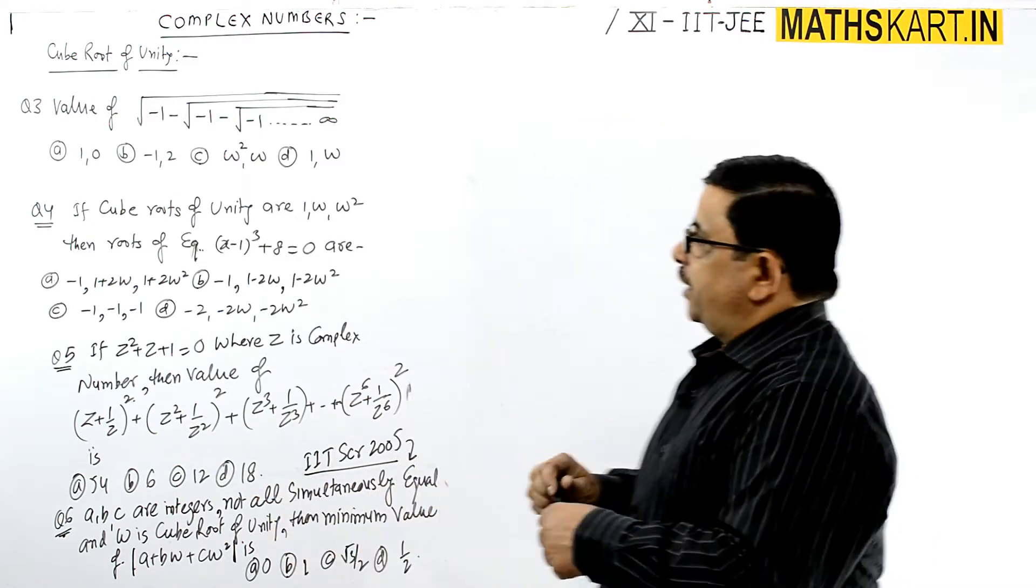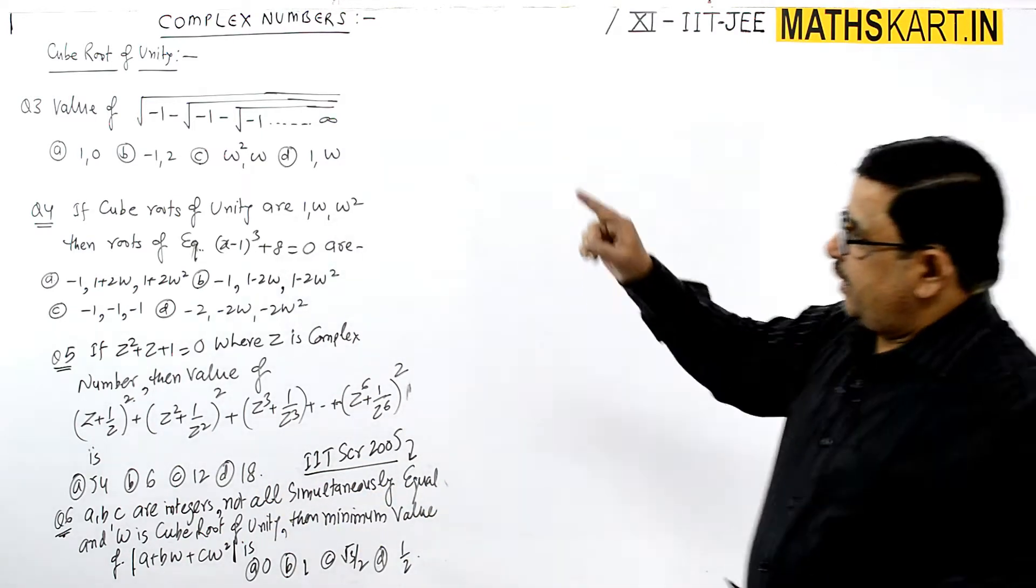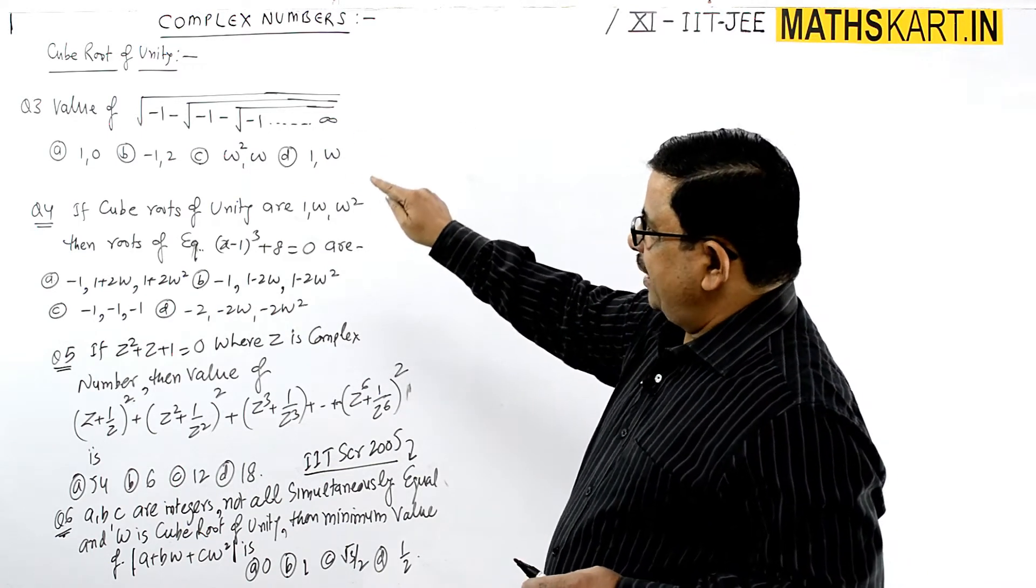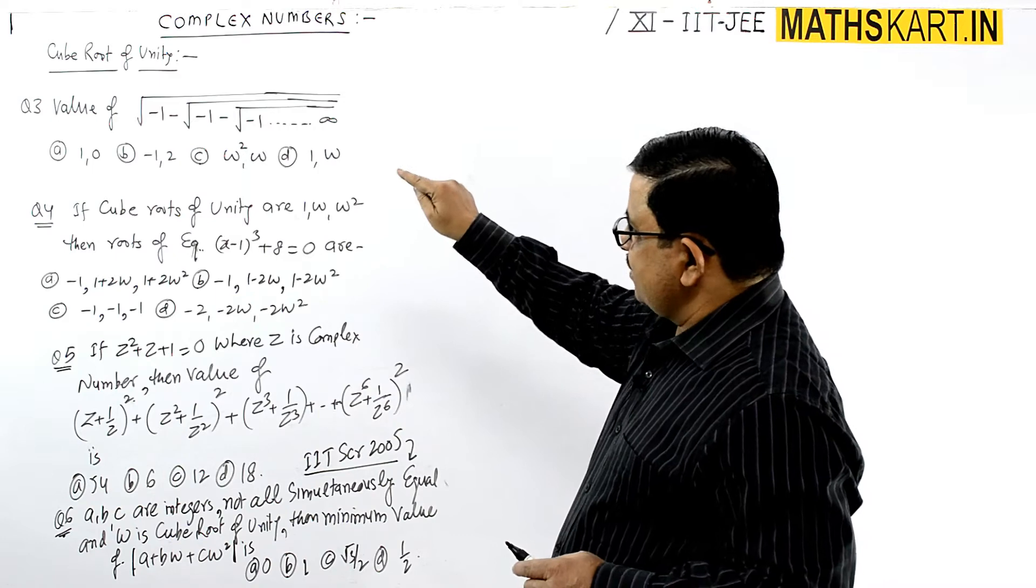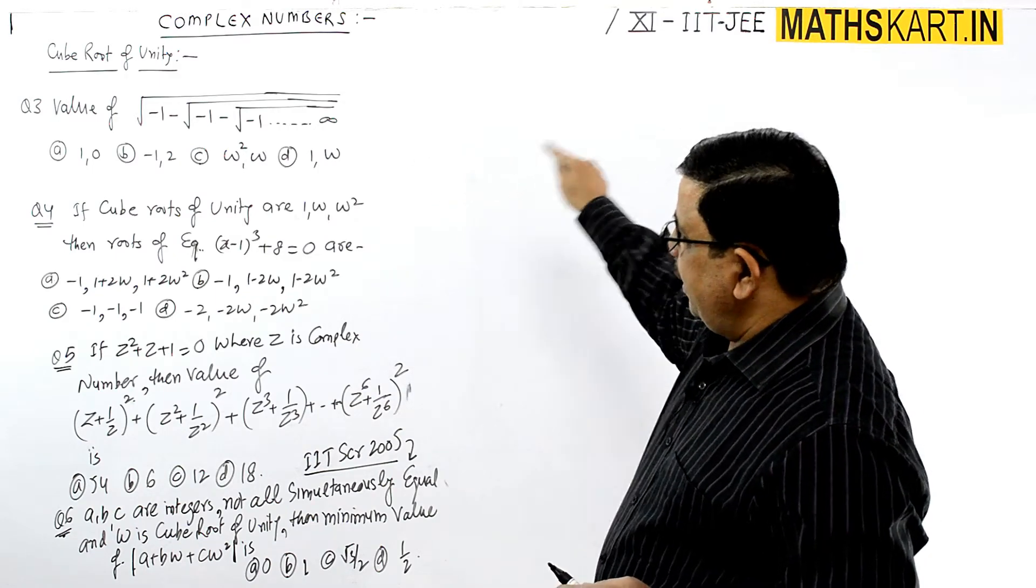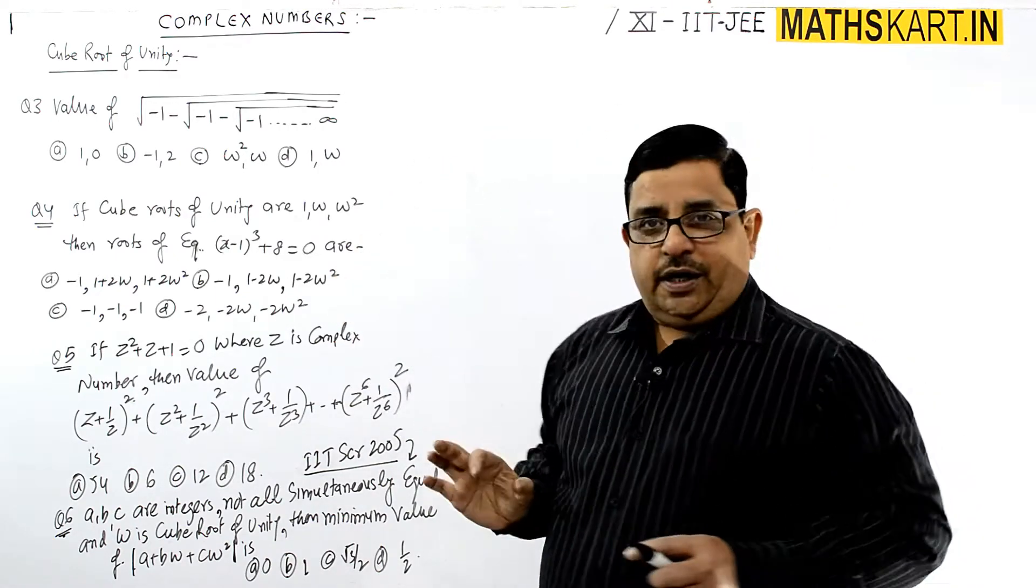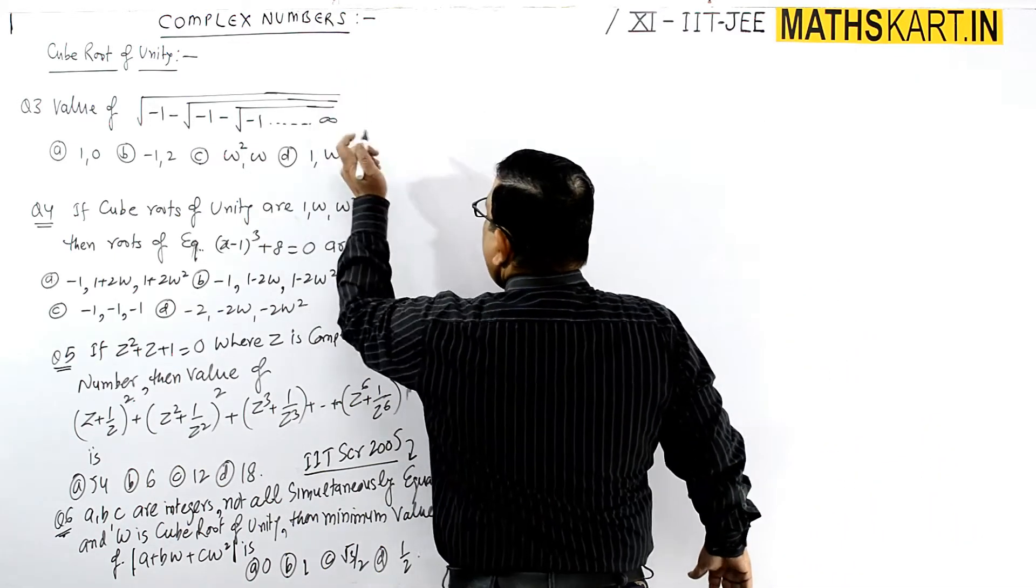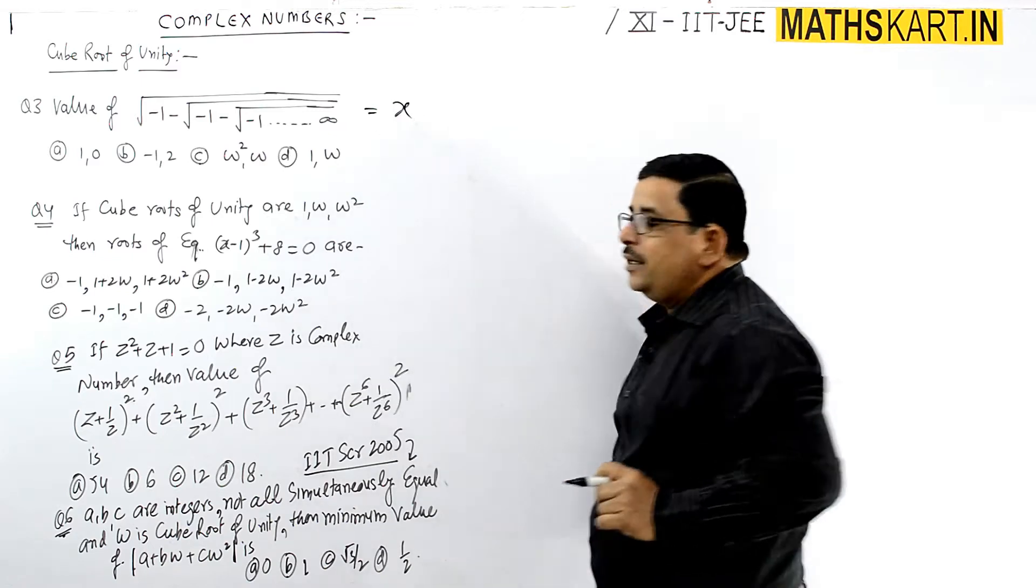First question here: the value of this under root of minus one minus under root of minus one minus under root of minus one, and it goes up to infinite, and you have to find out the value.